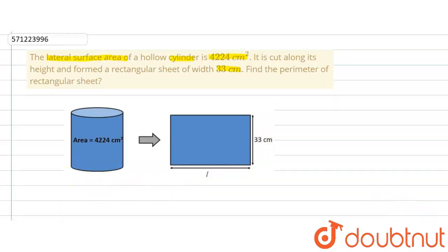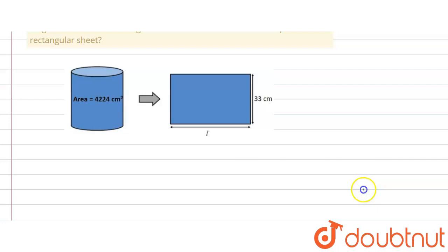So first of all we will write down what has been given in the question. We are given the lateral surface area or curved surface area of cylinder which is 4224 cm².